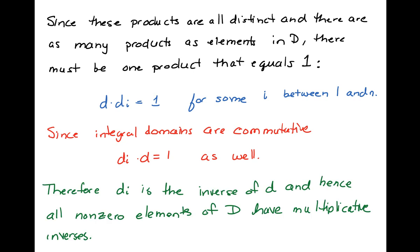Therefore, we have that di is the inverse of d by definition, and all non-zero elements are going to have multiplicative inverses. Since d was arbitrarily chosen, I'm allowed to say that all non-zero elements have a multiplicative inverse.